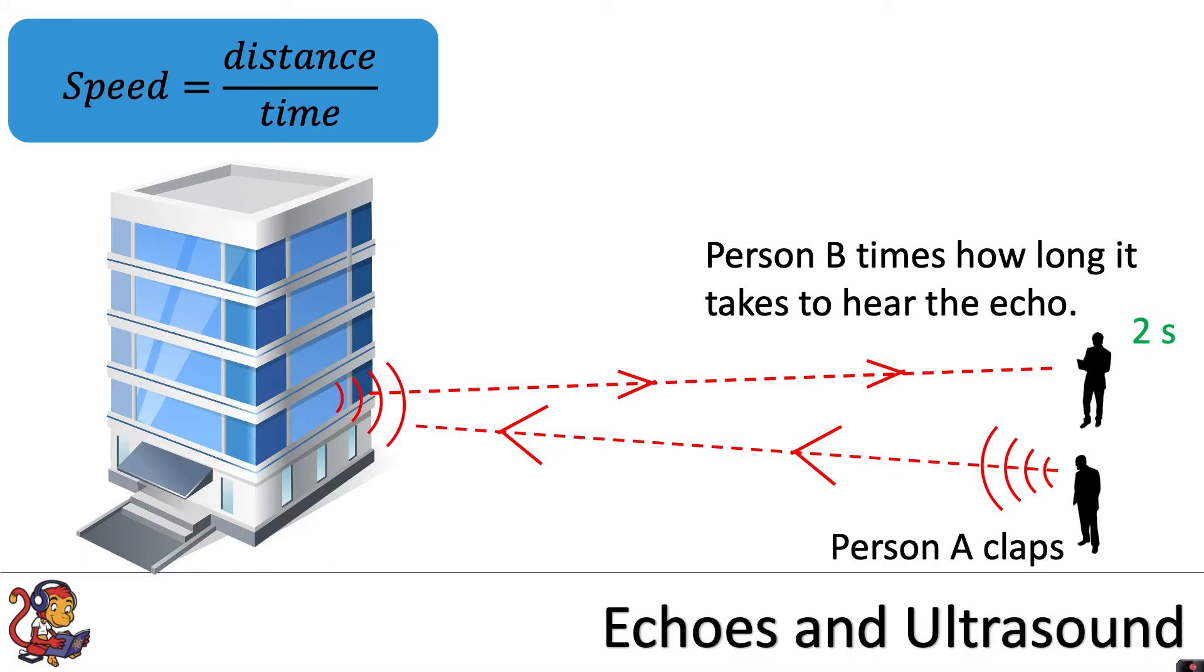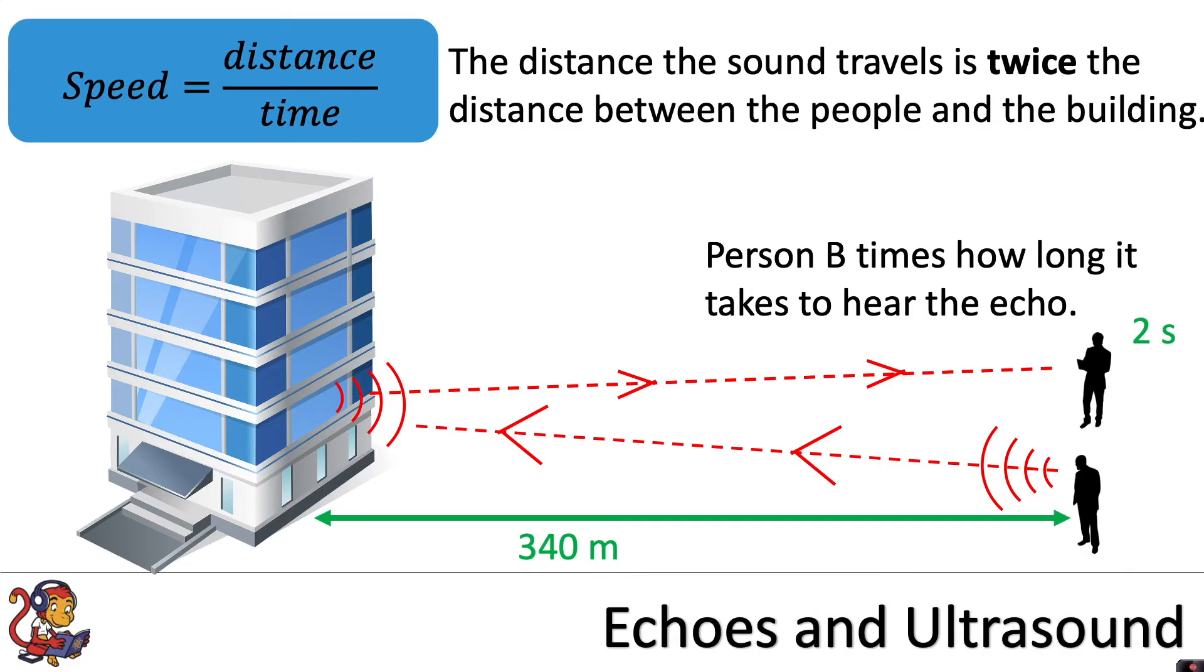We also need to know the distance. The distance between the person and the building we could measure using a tape measure. Let's say it's 340 meters. But this is important: we must remember that the sound wave travels to the building and back. So the distance the sound travels is twice the distance between the people and the building. In total, the sound would have traveled 680 meters.